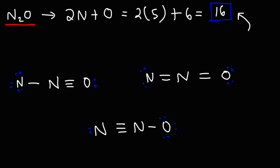To determine the best Lewis structure, we need to find which one has the minimal formal charge. Ideally we want a structure that is neutral overall, or neutral on individual elements. The more charge separation we have, the less stable the Lewis structure is. Here's a simple formula: formal charge equals the number of valence electrons minus the bonds and dots around that element.